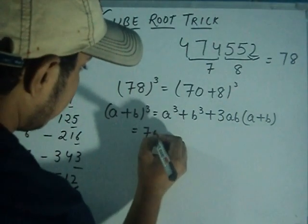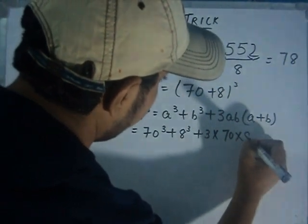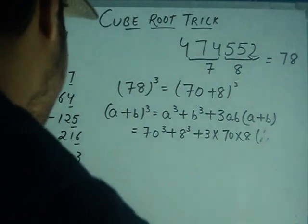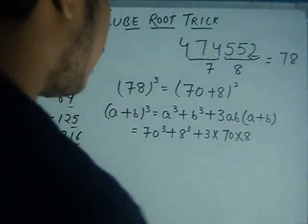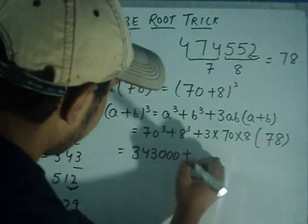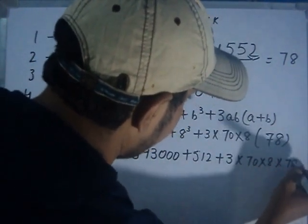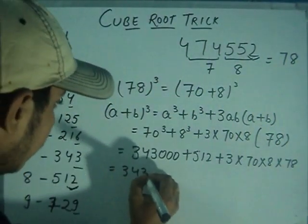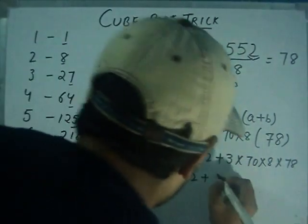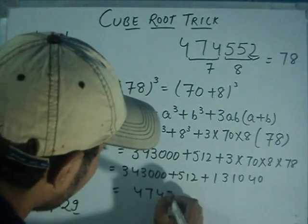So we calculate like 70 cube plus 8 cube plus 3 into 70 into 8 into 78. It's 343 triple zero plus 512 plus the product value of this is 131040. And we get our final answer as 474552.